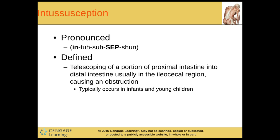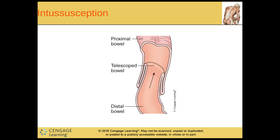And then we have intussusception. This is the telescoping of a portion of the proximal intestine into the distal intestine, usually in the ileocecal region, causing an obstruction. It typically occurs in infants and young children. Telescopes kind of fall onto or into each other — this is the proximal bowel, and the distal bowel is folding up into the proximal bowel like a little telescope.